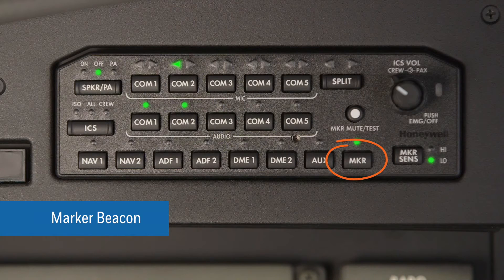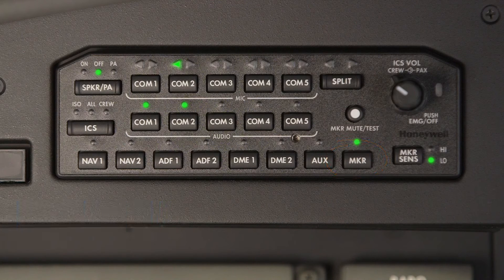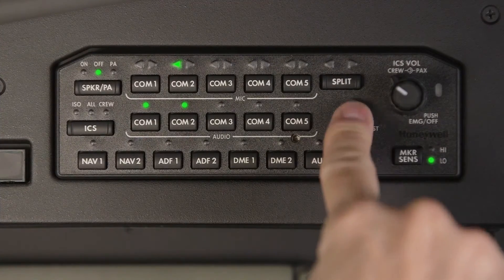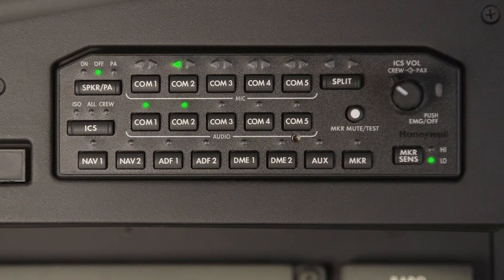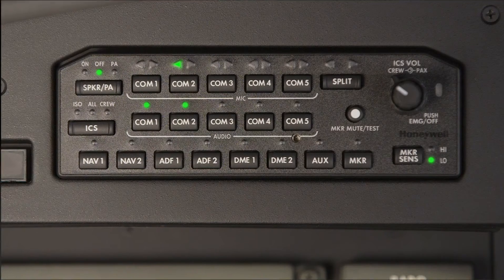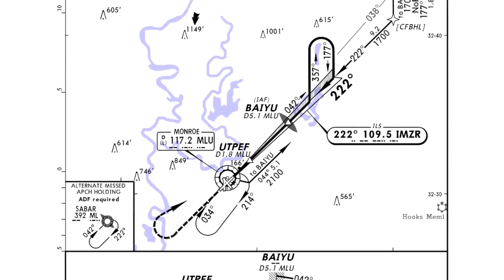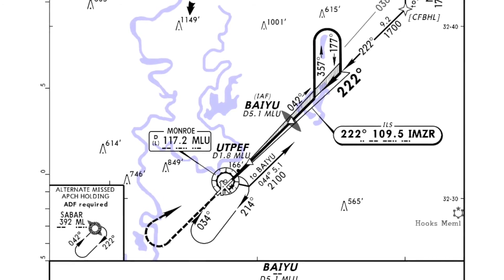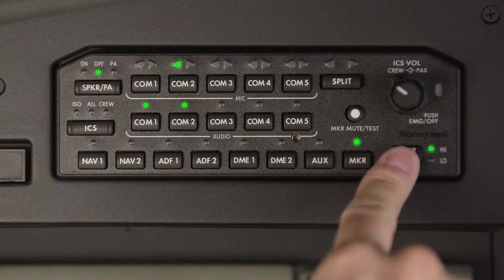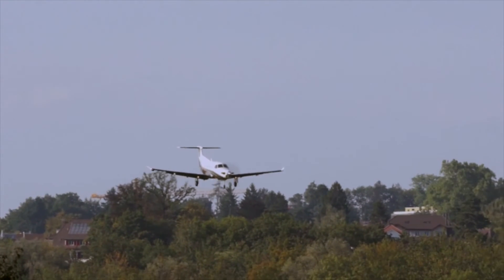The marker beacon receiver uses both visual and audio indicators to alert the pilot when the aircraft passes over a 75 megahertz transmitter. When the marker button is pushed, the light above the button is turned off and the marker audio is muted. Pushing the mute button mutes the marker beacon for 60 seconds or until passing another marker beacon. Pushing the marker sensitivity button toggles the receiver sensitivity between high and low. High permits the pilot to hear the outer marker approximately one mile from the beacon, and low provides a more accurate location of the marker. Many pilots choose to leave the receiver in the low sensitivity position when it's being used for approach markers.